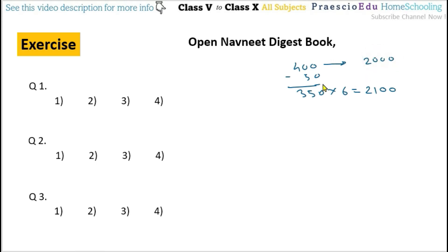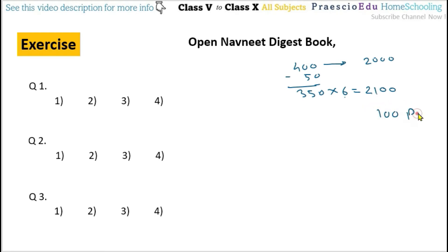50 eggs were broken during transportation. But the remaining 350 eggs he sold at rupees 6 per egg. So 2100 minus 2000 gives 100 rupees profit, because the selling price is greater than the cost price. So 100 rupees profit he had made, and this is given in option number 1.